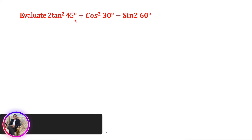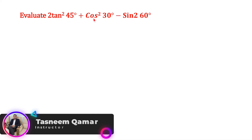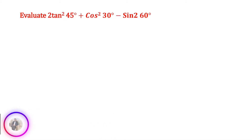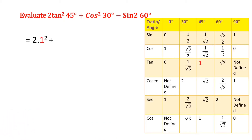Evaluate 2 tan squared 45 degrees plus cos squared 30 degrees minus sin squared 60 degrees. From the trigonometric table, tan 45 degrees is 1, so 2 into tan squared 45 is 1 squared. Cos 30 degrees is root 3 by 2, so cos squared 30 is root 3 by 2 whole square.